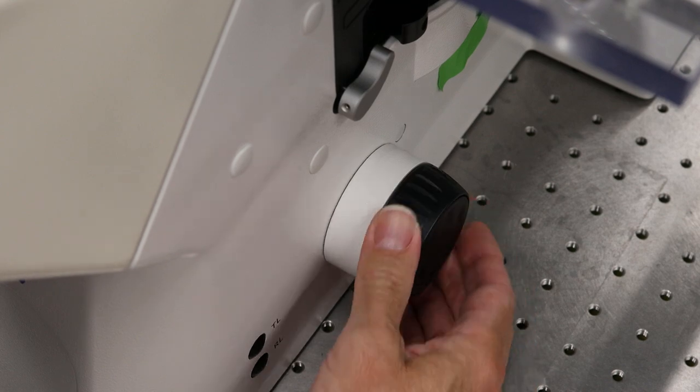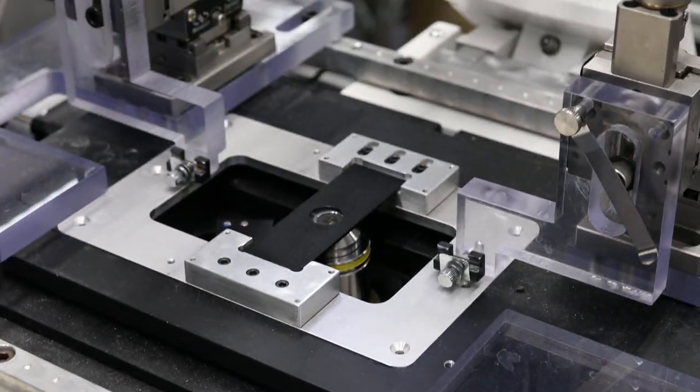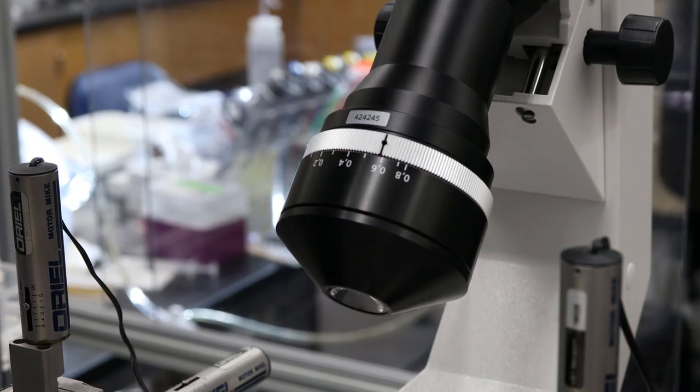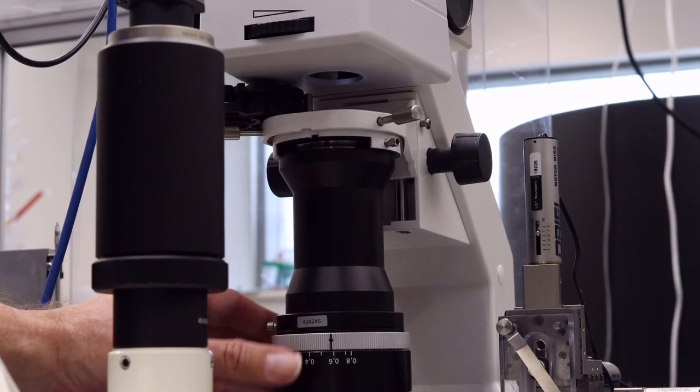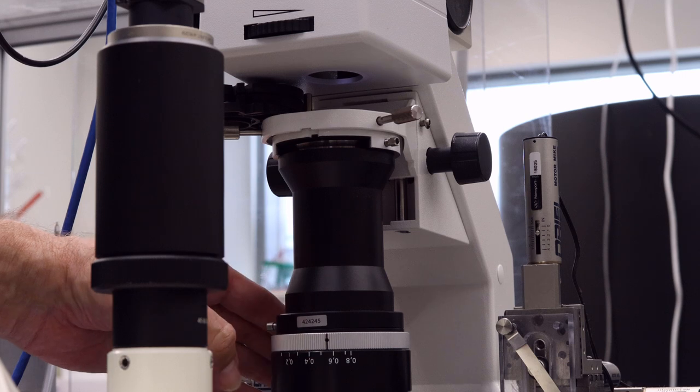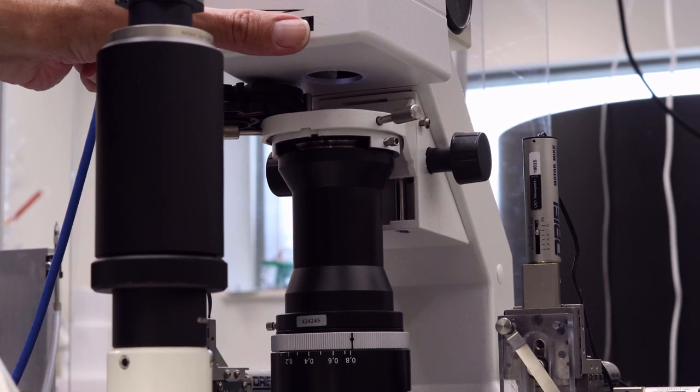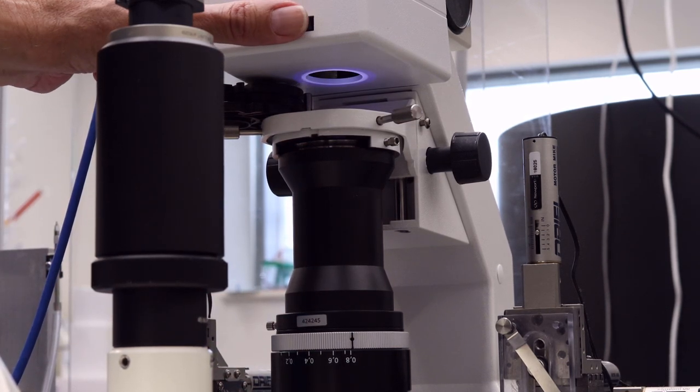Next, we raise the objective, lower the condenser, and adjust the two diaphragms so that we get enough light in the eyepieces to start looking for our specimen. Here I am opening both the condenser aperture and then the field stop all the way.